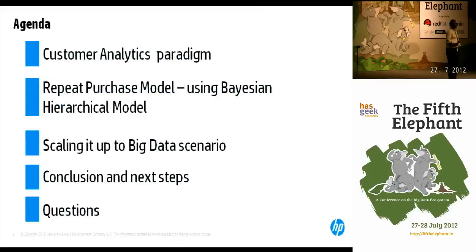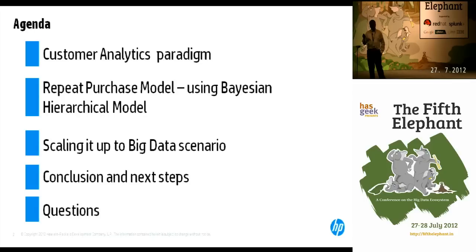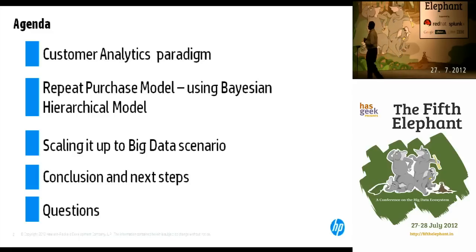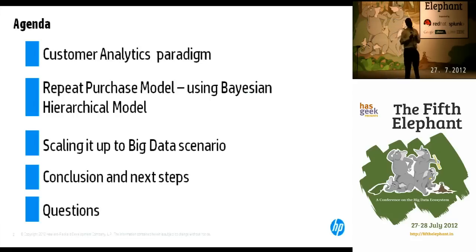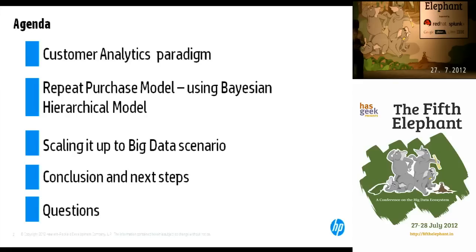For the discussion today, the agenda for the next 25 or 30 minutes is: I'll first talk about the customer analytics paradigm — how the work that we have done, which is pretty technical stuff, really fits into the entire business perspective. Then I'll hand it over to my colleague Subhashish to talk about techniques around the Bayesian hierarchical model and how we improvised our original model to be big data relevant. We'll conclude with next steps and open up for questions in the last five to seven minutes.